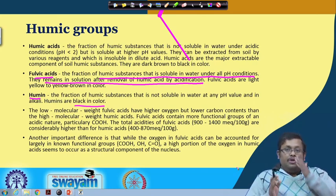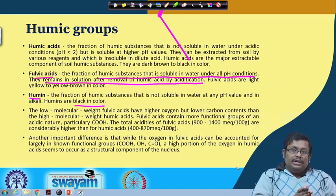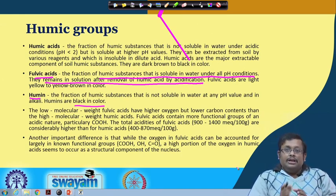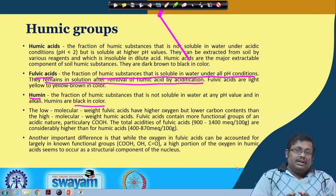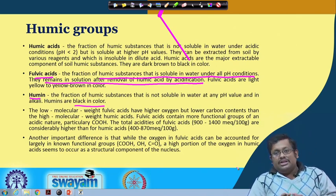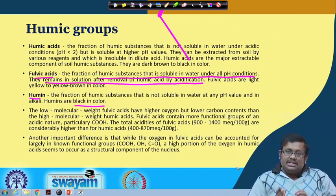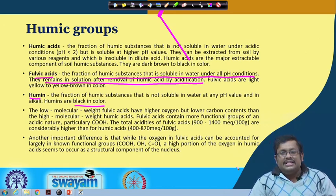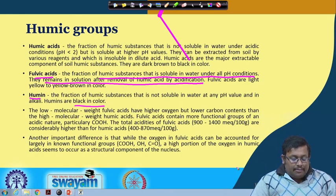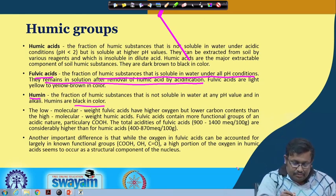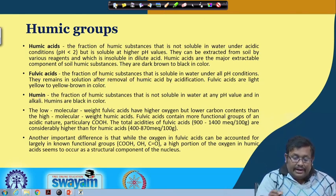Oxygen in fulvic acid can be accounted largely in known functional groups - acidic group, phenolic group, and carbonyl group - whereas a high portion of oxygen in humic acid occurs in a structural component of the nucleus. Humic acid is insoluble in acidic conditions but soluble in alkaline conditions; fulvic acid is soluble in all conditions; the insoluble fraction is called humine and is black. Fulvic acid contains more oxygen-containing groups and is more acidic, while humic acid contains more carbon and has higher molecular weight.